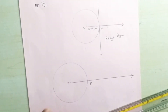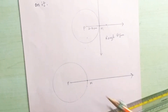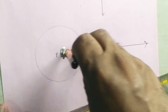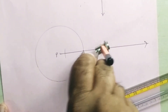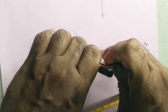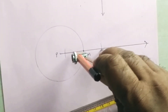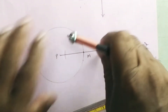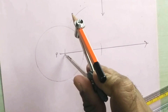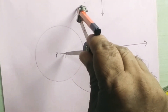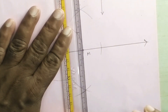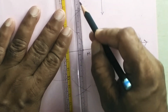Now we have to draw the tangent passing through M. With the help of the compass, keep the pointer at M and draw one arc on the left side of the ray and one on the right side. Now take more than half the distance between these two arcs and draw one arc above and one below. Similarly, from the other arc cutting ray PM, cut the arc above and below, then draw the tangent passing through point M on the circle.